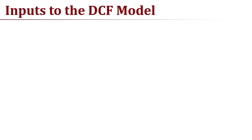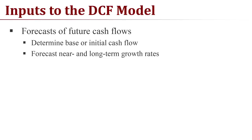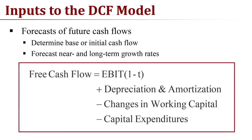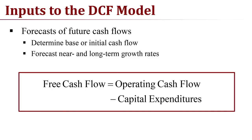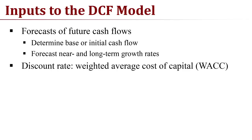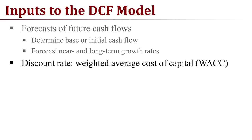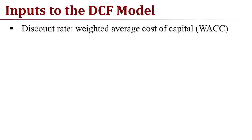Now let's talk about the specific inputs to the discounted cash flow model. First, we have to make forecasts of future cash flows. We first determine a base or initial cash flow, and from there build our forecast of future cash flows. I like to split those forecasts into near and long-term. The near-term future cash flows we can forecast by thinking of year-over-year growth rates, giving us the year-to-year cash flows in the near-term. Over the long-term, we apply some average long-term growth rate. To discount these cash flows, we need a discount rate — the firm's weighted average cost of capital.